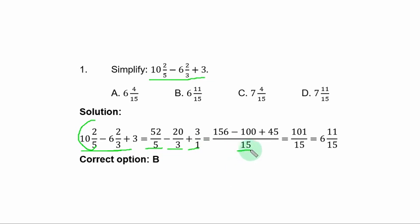The rule is that you divide the LCM by each denominator, your answer times numerator. So, 15 divided by 5, you have 3. 3 times 52, you have 156. The same 15 divided by 3, you have 5. 5 times 20, that is 100. Divide 15 by 1 is 15. Times 3, you have 45. If you subtract and add, you have 101 over 15. This answer is not in the option. So, you convert it to mixed fraction and you have 6 whole number 11 over 15. B is the correct option.